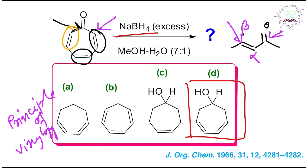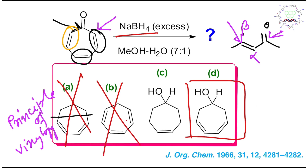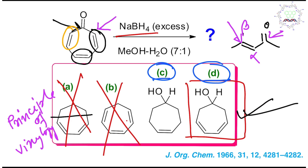Excess sodium borohydride is given, so some options are illogical. One option is not possible because sodium borohydride reduces carbonyl groups to alcohols — if the product shown is an aldehyde, it cannot be correct. The real competition is between option C and option D. If you know the proper mechanism, you can select the right answer. Option D is correct.